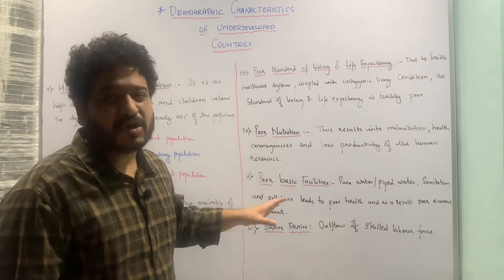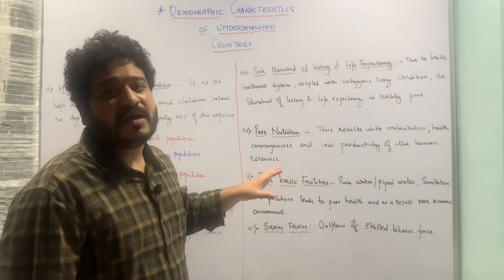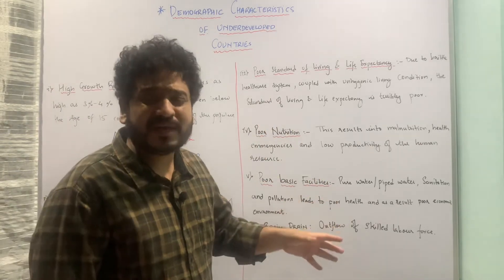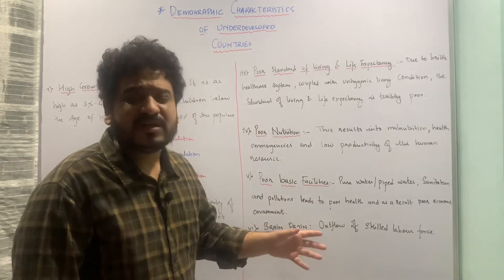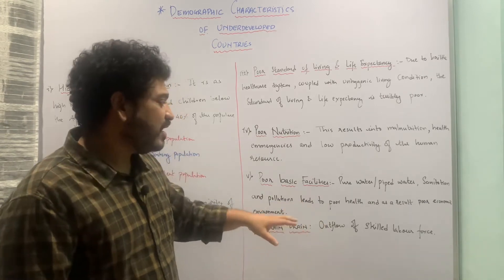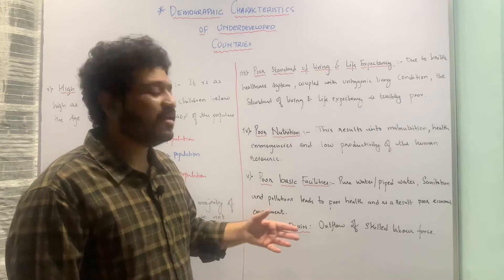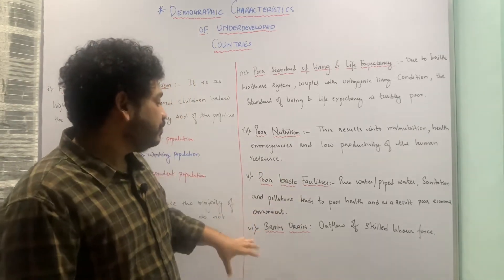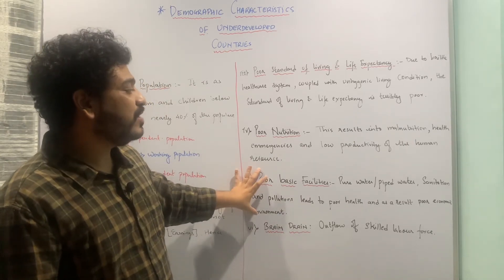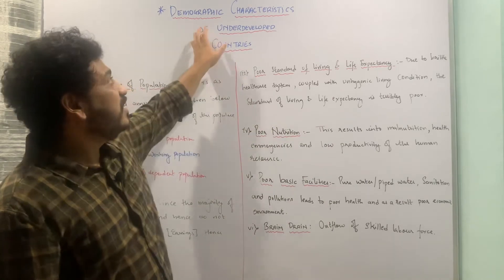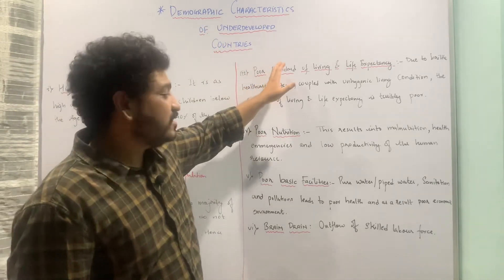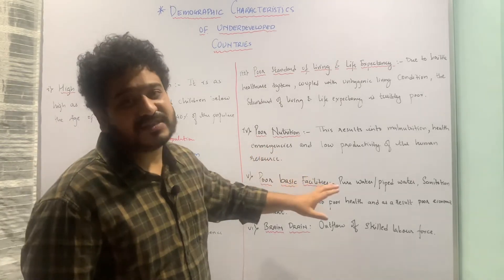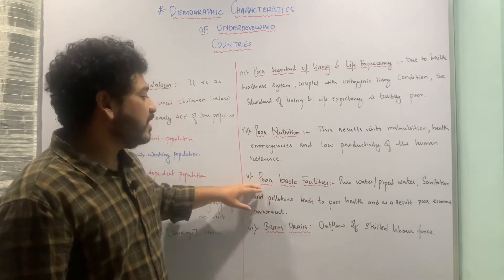Let us now move to poor basic facilities. Basic facilities are really poor in shape in developing economies — piped drinking water, sanitation, healthcare services, and health centers are all in terrible condition. As a result, the economic environment becomes very poor. Good basic facilities, at least sanitation and piped water connection, are essential, and their absence is an important demographic characteristic of any underdeveloped economy.